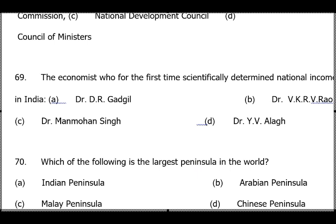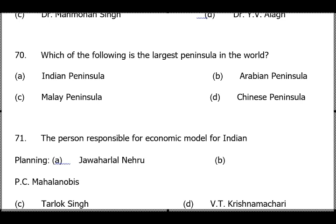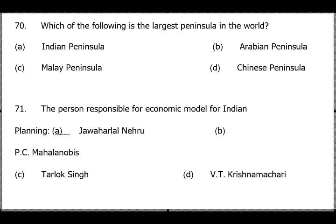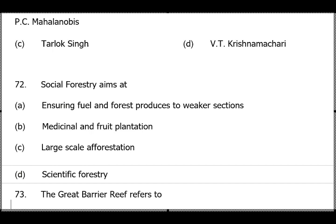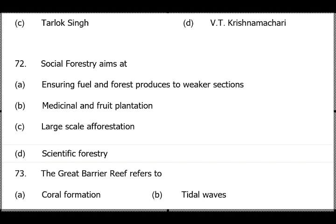Question 69: Who scientifically determined the national income in India? Answer is option B, Dr. V.K.R.V. Rao. Question 70: The largest peninsula — answer is the Arabian Peninsula. Question 71: The person responsible for the economic model for Indian planning is P.C. Mahalanobis. The Second Five-Year Plan is known as the Mahalanobis Model, which stressed industrialization, while the First Plan (Harrod-Domar model) emphasized agriculture.